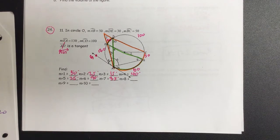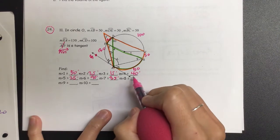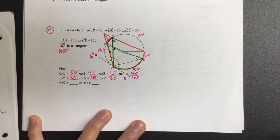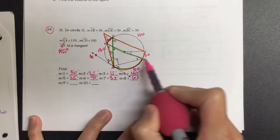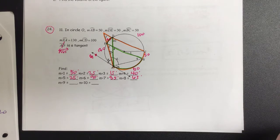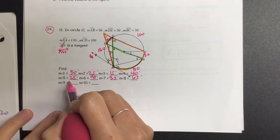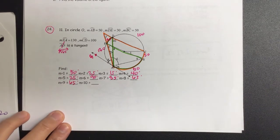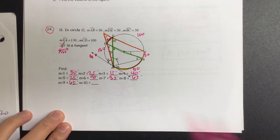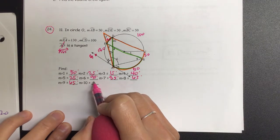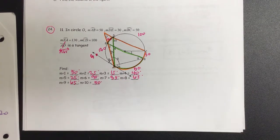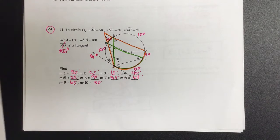So for angle 8, it's another inscribed. So 130 divided by 2 is how many? 65. And then angle 9 is another inscribed, and that's also part of 130. So how many is that? 65. What about angle 10 then? It's an inscribed angle. So it's got to be 50.